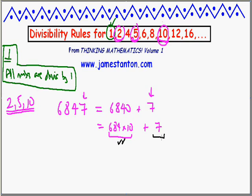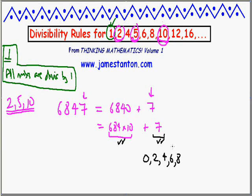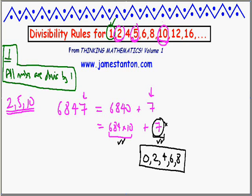Which possible final digits are divisible by 2? Well, 0, 2, 4, 6, and 8 are all single digits divisible by 2. For instance, 7 isn't, so 6,847 is not a multiple of 2. To check for divisibility by 2, just check that the final digit is one of those numbers we recognize: 0, 2, 4, 6, or 8.